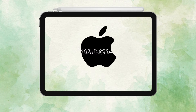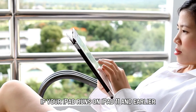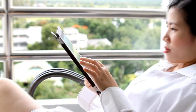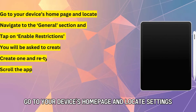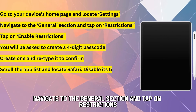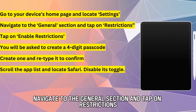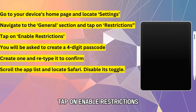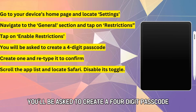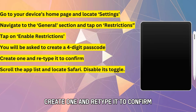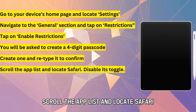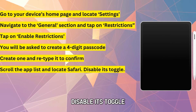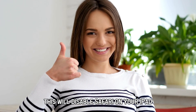For iOS 11 and earlier, if your iPad runs on iOS 11 and earlier, follow these steps to block Safari. Go to your device's home page and locate Settings. Navigate to the General section and tap on Restrictions. Tap on Enable Restrictions. You'll be asked to create a four-digit passcode — create one and retype it to confirm. Scroll the app list and locate Safari, then disable its toggle. This will disable Safari on your iPad.